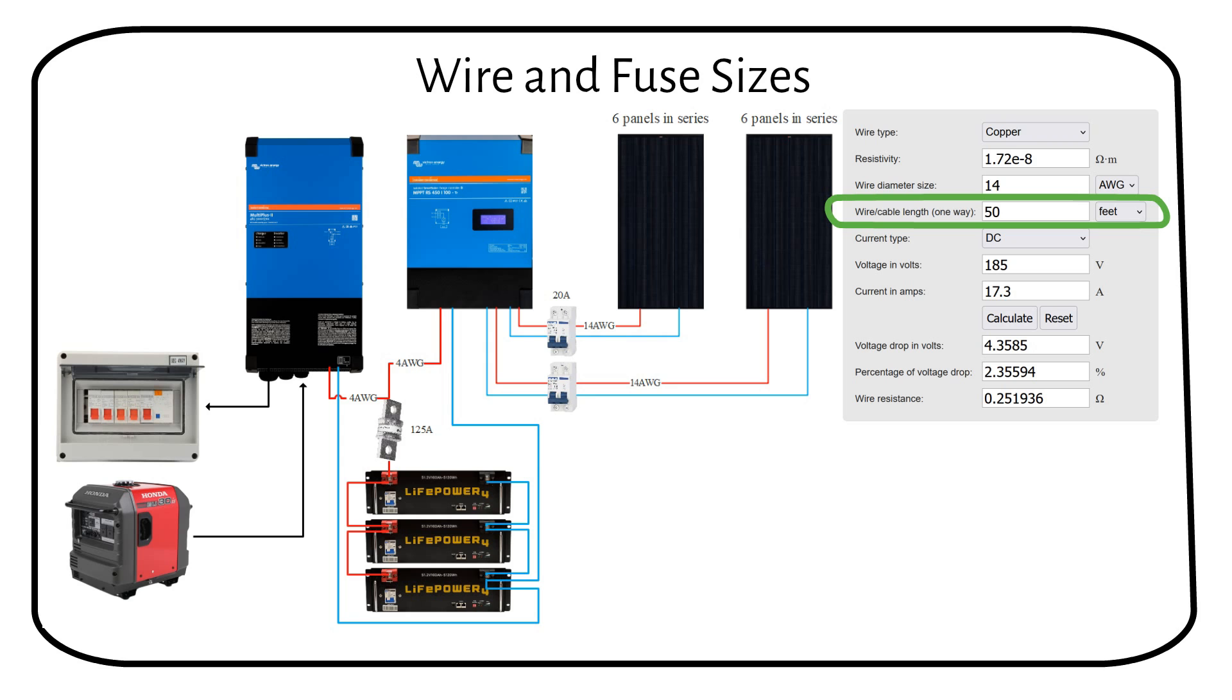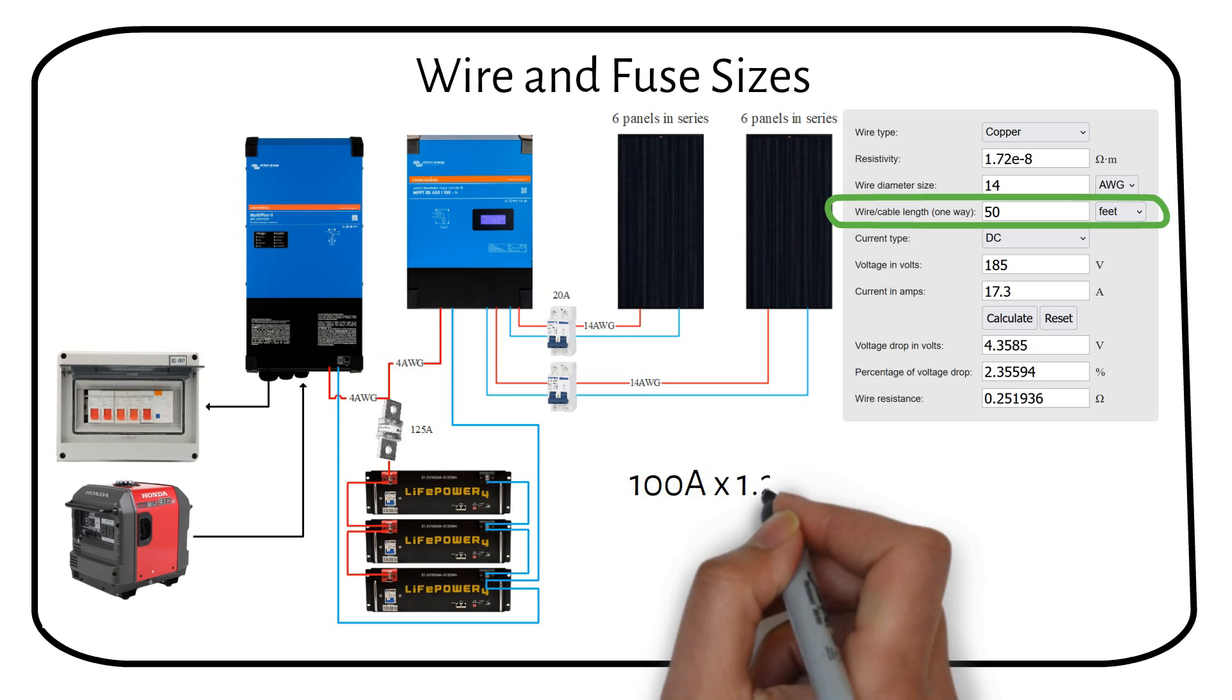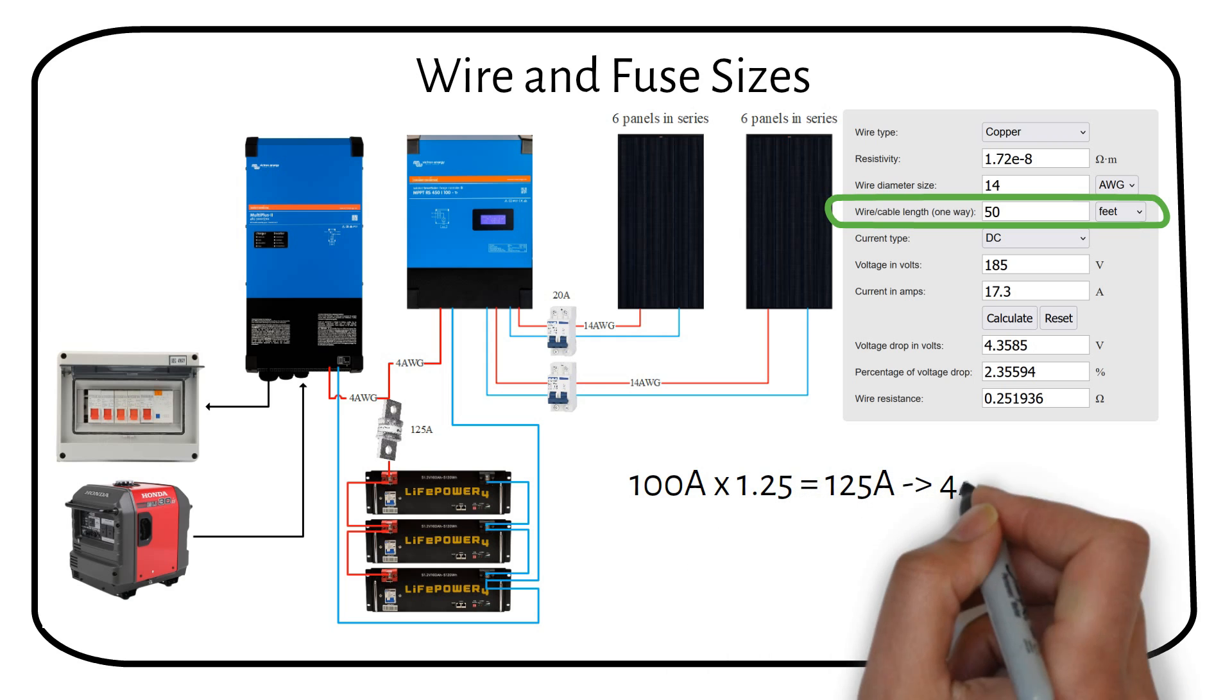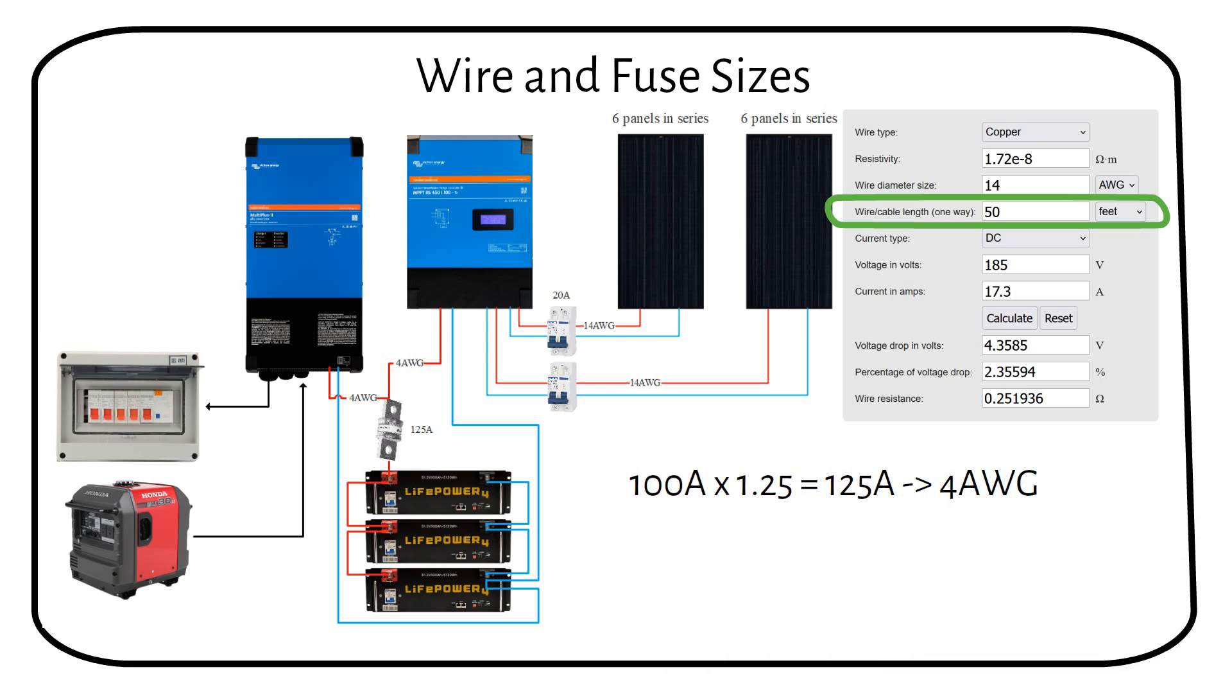The charge controller outputs 100A. Applying a 1.25 safety factor, you would need a cable that can handle 125A. Use 4 gauge welding cable, which can carry up to 150A. Install a 125A class D fuse to protect the cable.